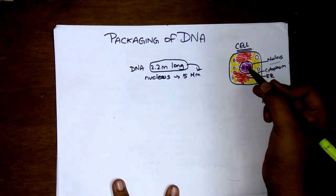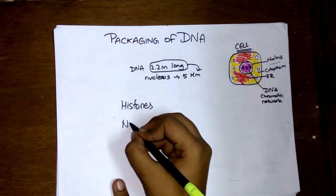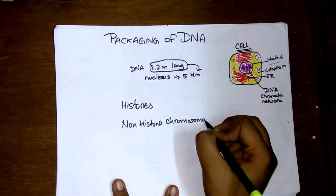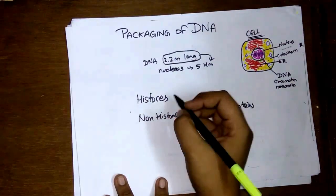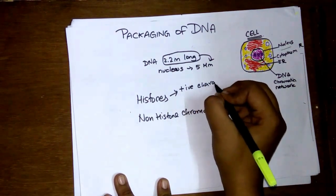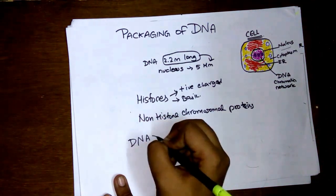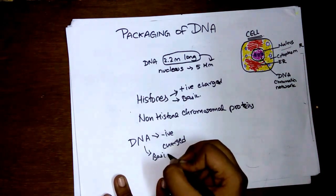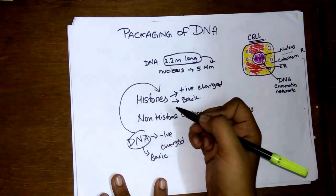Your DNA packages with proteins called histones and non-histone chromosomal proteins that are present inside your nucleus. First, a histone molecule is a protein which is positively charged and it is basic. Now we know that DNA is negatively charged and it's also basic, so the DNA gets attracted to the histone molecules.